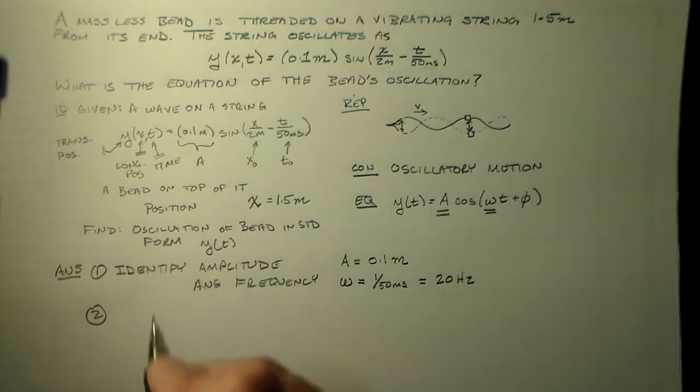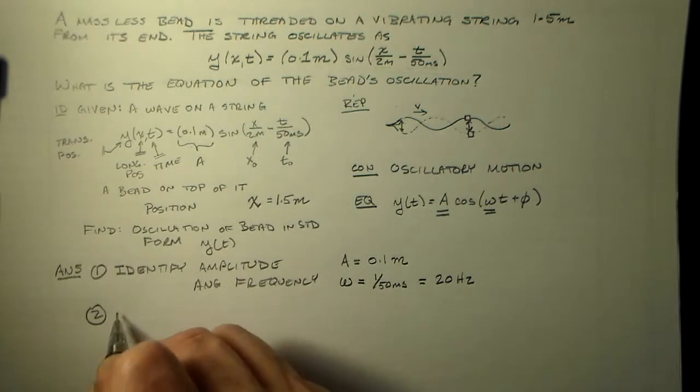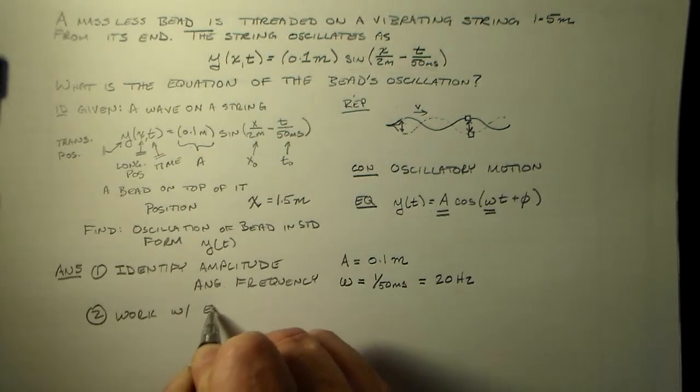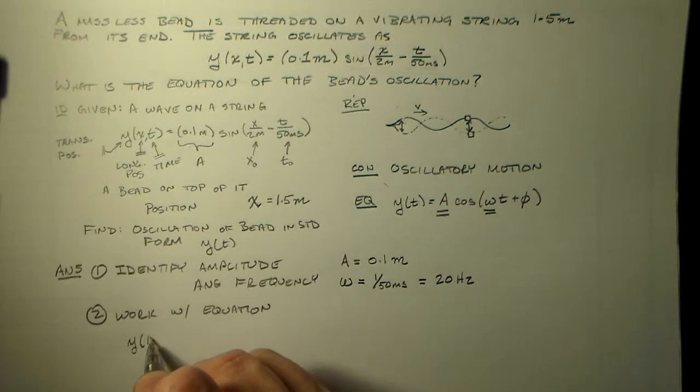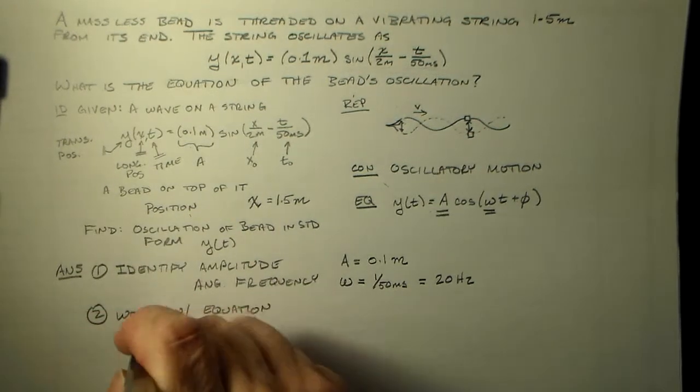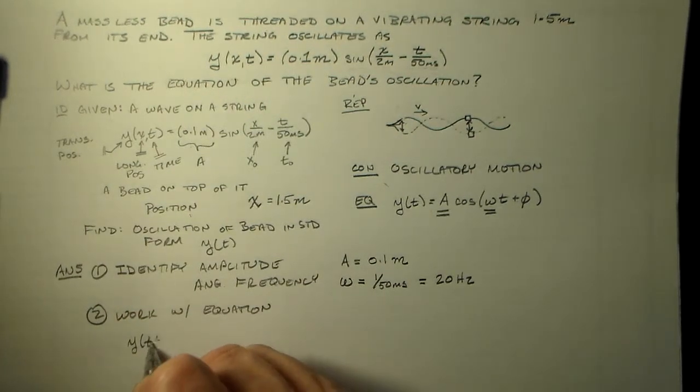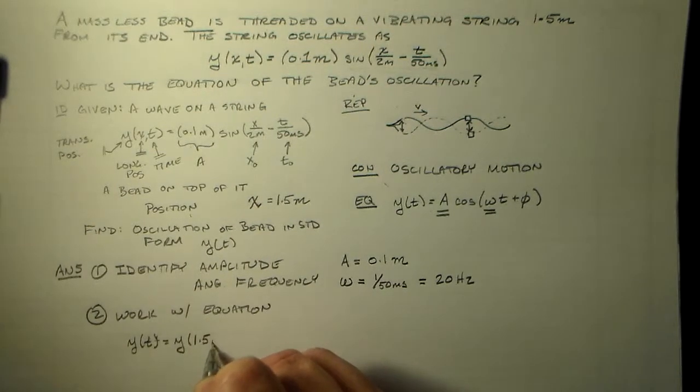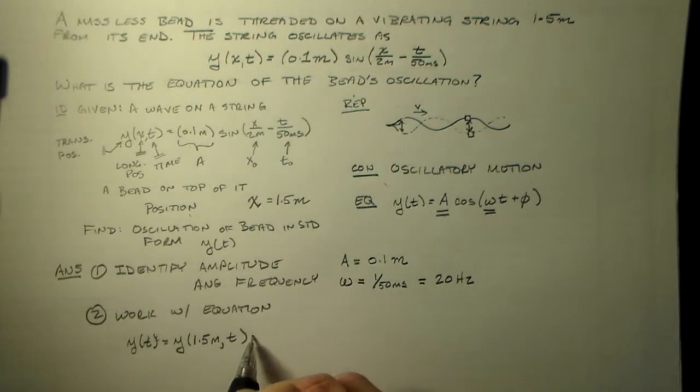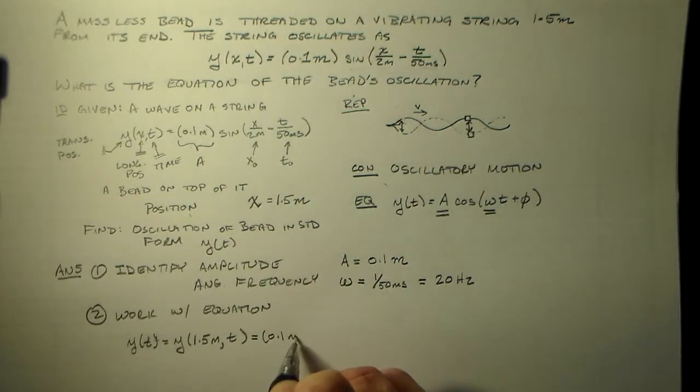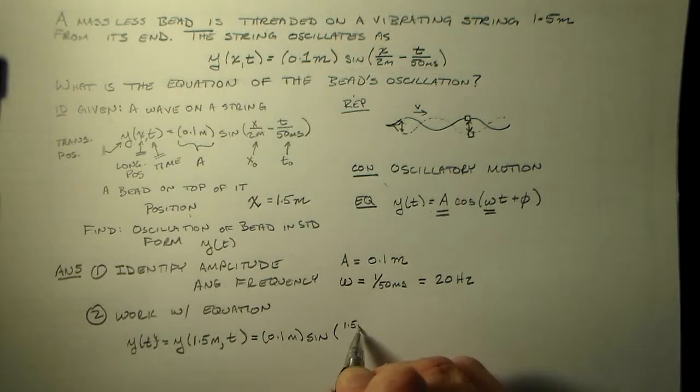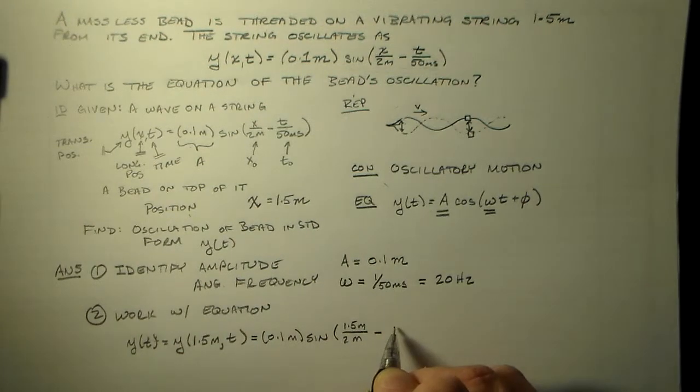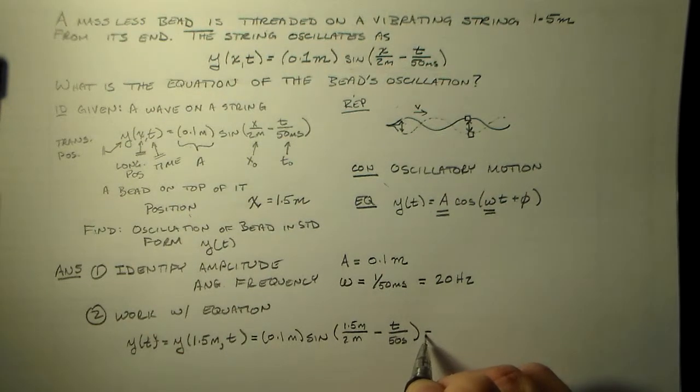Alright. So then we'll just work with the equation. Alright. So we have y of t or y of x comma t. Y of t. That's what I want. Y of t is equal to y of 1.5 meters comma t. Right?